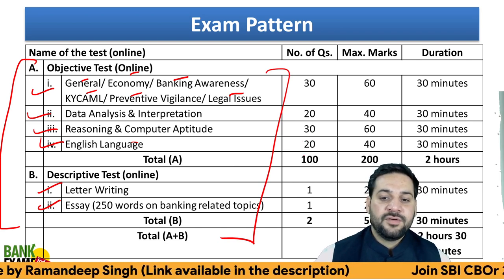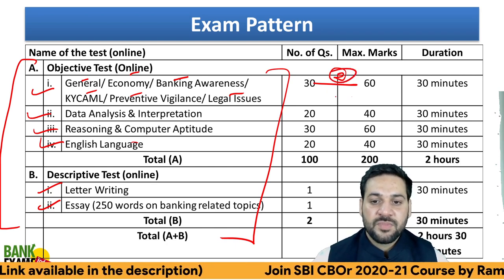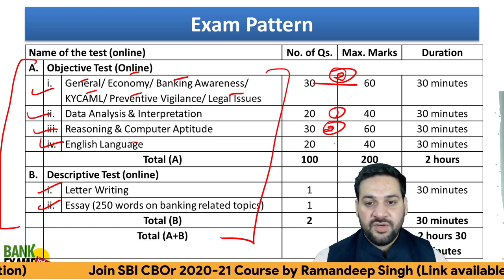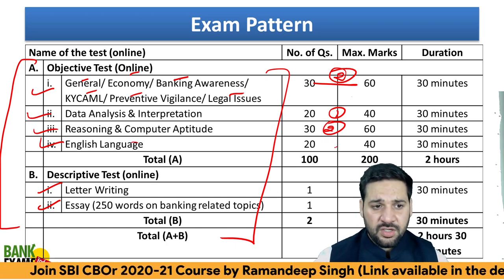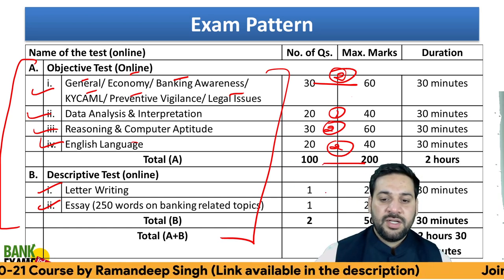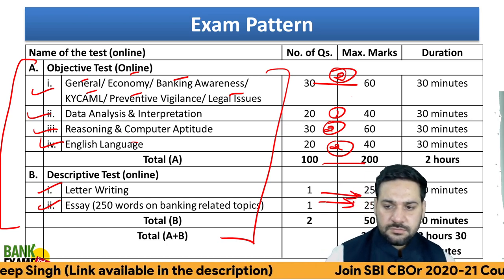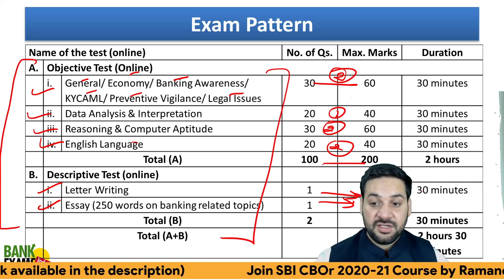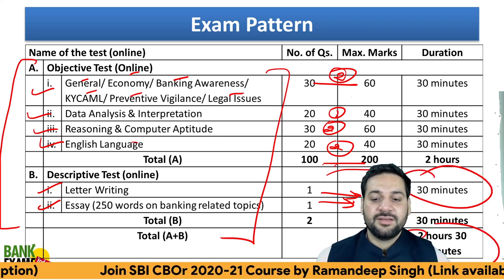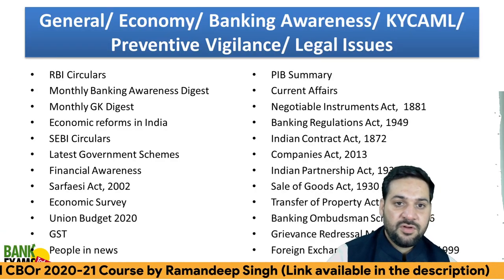The weightage for general economy and banking awareness is two marks. Weightage for data analysis is one, for reasoning and computer aptitude is two, and English language is also two. For letter writing, one letter is equal to 25 marks and one essay is equal to 25 marks. However, the time allotted is not sufficient — just 30 minutes allotted for letter writing as well as essay writing. Total time is two hours and 30 minutes. The penalty for a wrong answer is one-fourth.